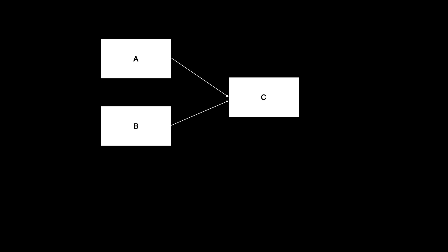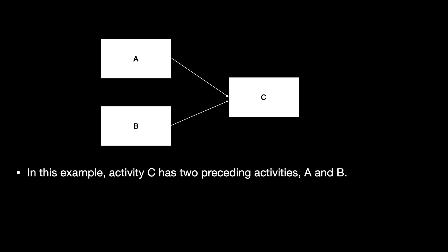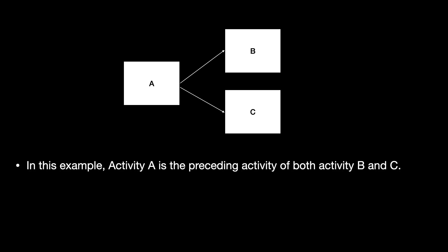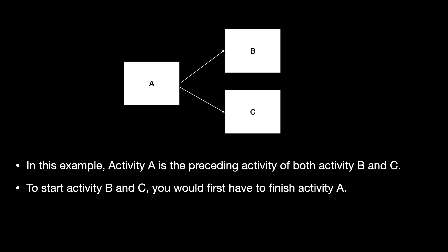If you have two activities, A and B, it is possible that only after both are completed can you go ahead with another activity, activity C. So activity C has two preceding activities, A and B, and you would first have to finish both before starting C. Similarly, right after you finish activity A, you can start both activity B and activity C at the same time, since there is no relationship between B and C. If there were a relationship between them, they would have been connected using arrows.